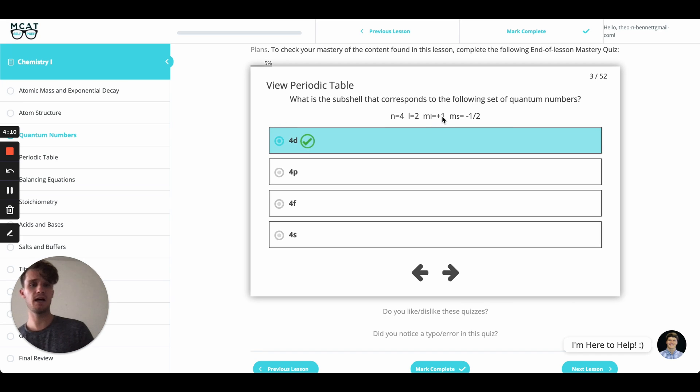And then these M sub L and M sub S - M sub L is just the orientation. You're not expected to know the different numbers and how they correspond to the different orientations. I have no idea how they relate, but I just know that each of them is different. And then with M sub S, those are the different spins. And again, this is just a negative spin. There's nothing that's really tested in detail about that as well.